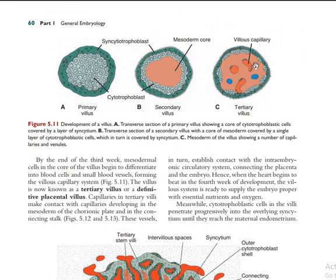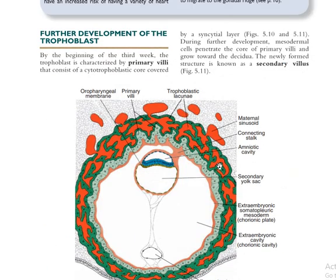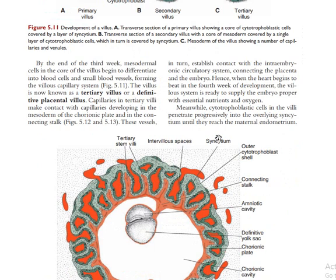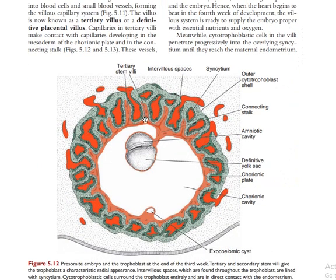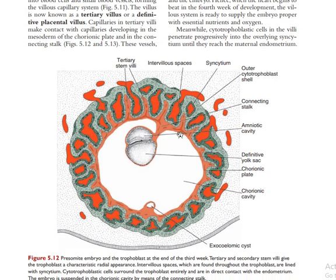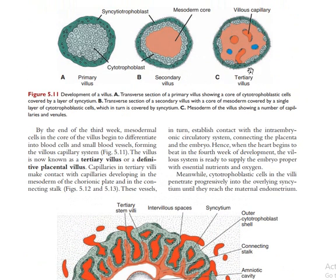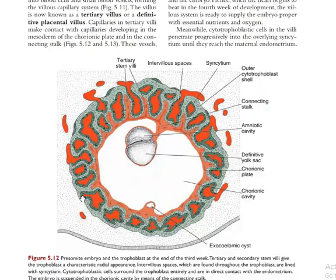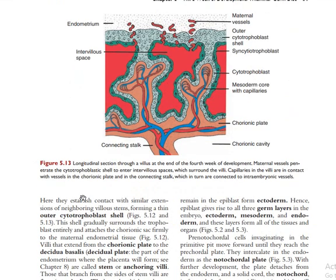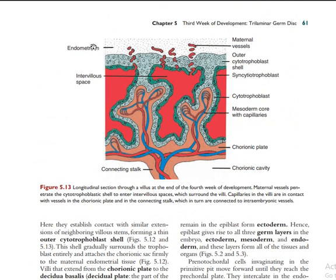After that, inside the villi you see villus capillaries forming — these are the tertiary villi. They contain the extraembryonic mesoderm, cytotrophoblast, and syncytiotrophoblast. The villi grow from primary to secondary to tertiary villi, all within the third week of gestation.